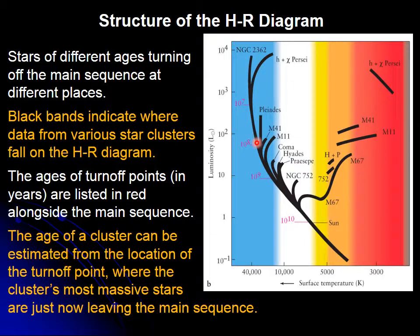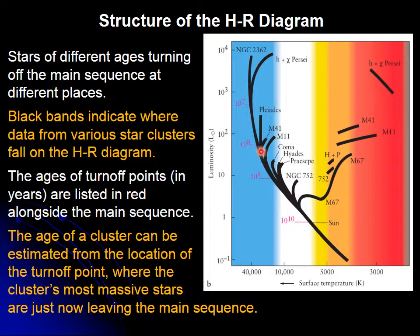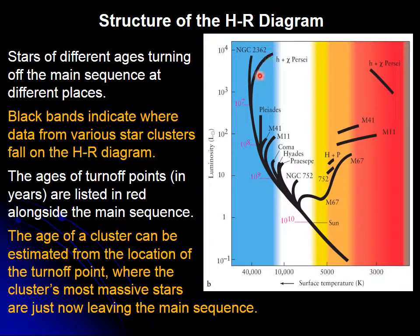Look at the Pleiades, for instance. The Pleiades begins here and goes all the way to a certain point. The rest are missing because they already moved out and are not plotted here. So the Pleiades is leaving the main sequence, and how old is it? It is about a hundred million years old — ten to the seven years of age.